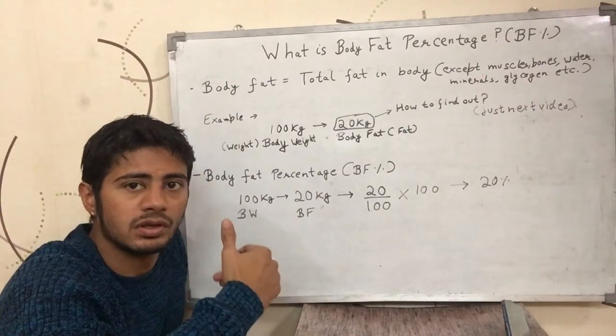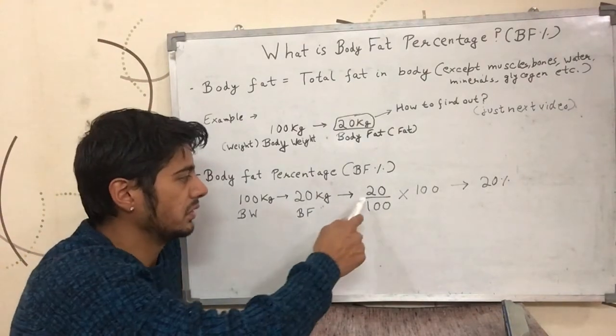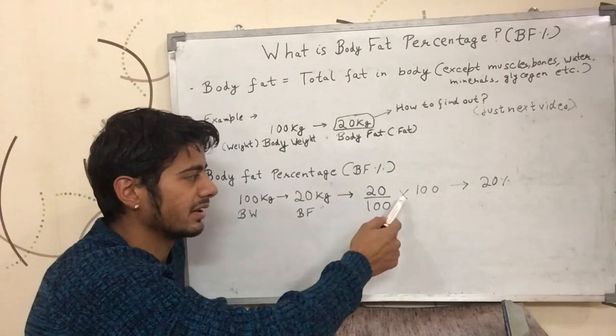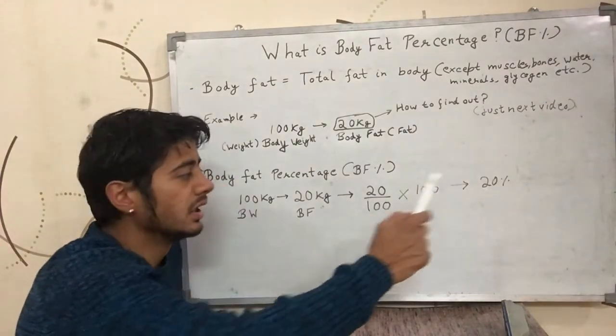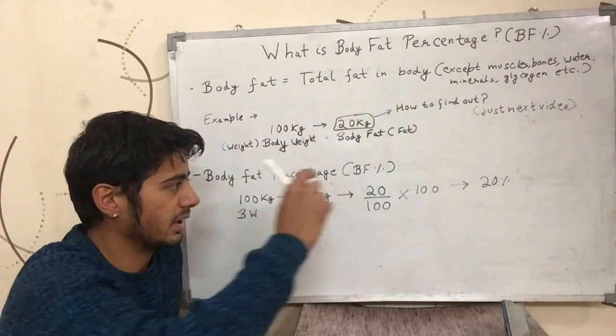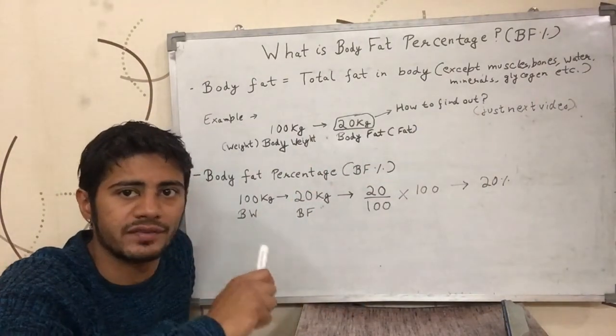So one fifth of his total body weight as fat. So we get a percentage of this which is like 20 by 100 into 100 to get the percentage. So this percentage is widely used in fitness industry and it is called body fat percentage.